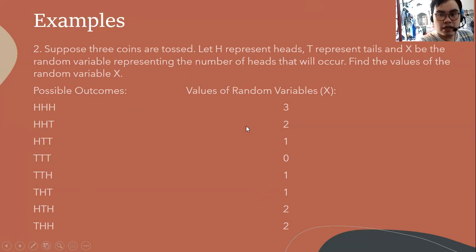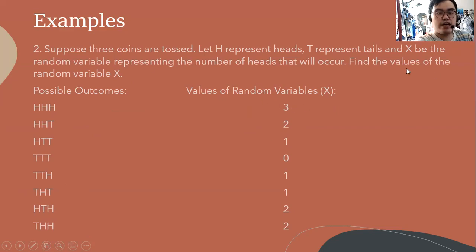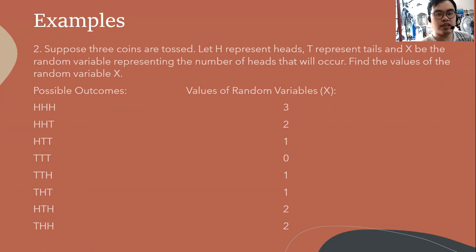Keep in mind that the possible outcomes must be written in all capital letters, while the random variable values being counted must be based on the given problem. Don't forget to subscribe to my YouTube channel and hit the notification bell. Thank you, God bless you, and have a great day.